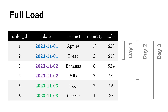With full loads, that's what we're doing. We've got day one sales, loading in on day one. Then on day two, we're dumping the table and loading day one and day two together. And on day three, we're loading all three days — we're reloading this entire table each time.